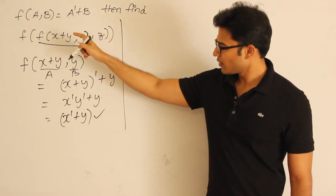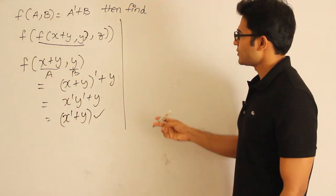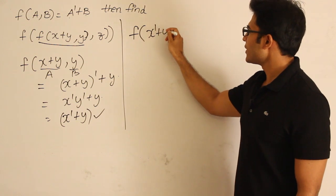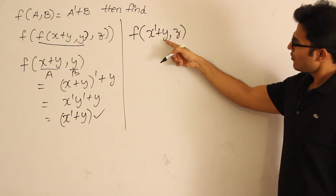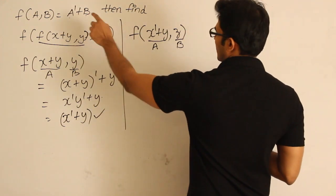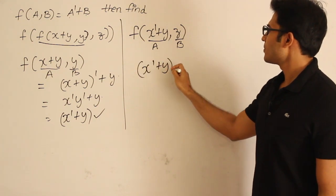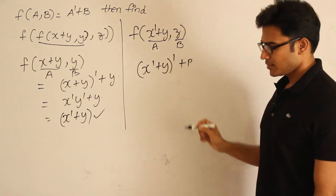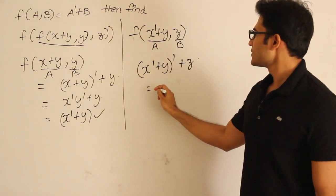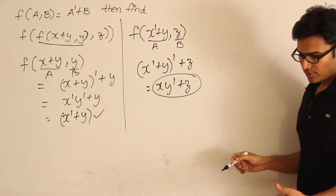So this inner expression evaluated to x' + y. Now the whole function can be evaluated as f(x'+y, z). If a = (x'+y) and b = z, then a' + b becomes (x'+y)' + z. Applying De Morgan's, (x'+y)' = x·y'. Therefore the entire function evaluates to x·y' + z. So the final answer is x·y' + z.